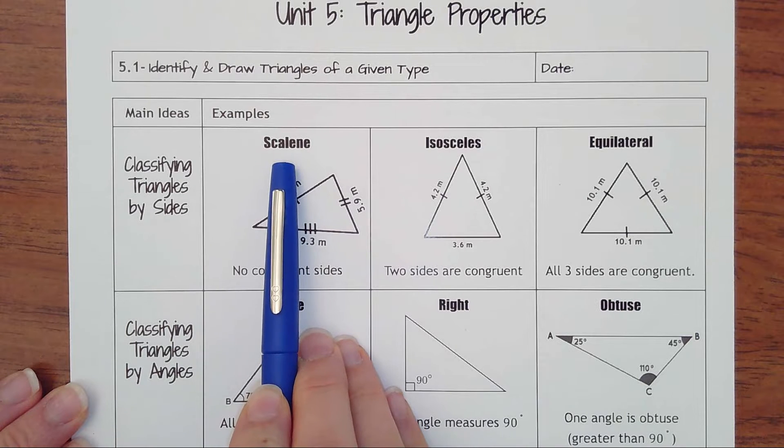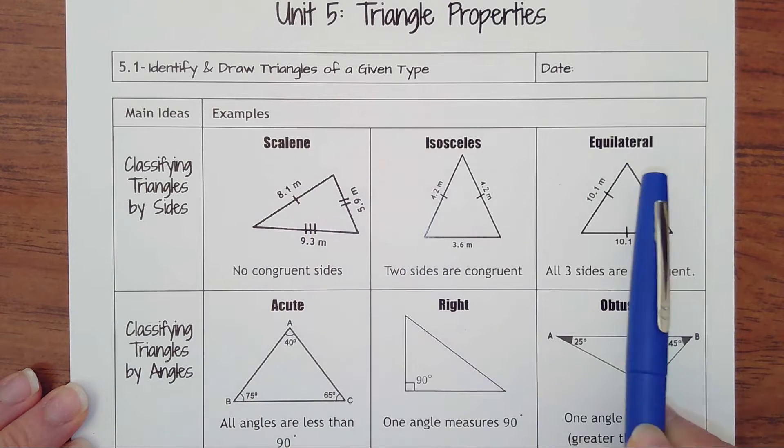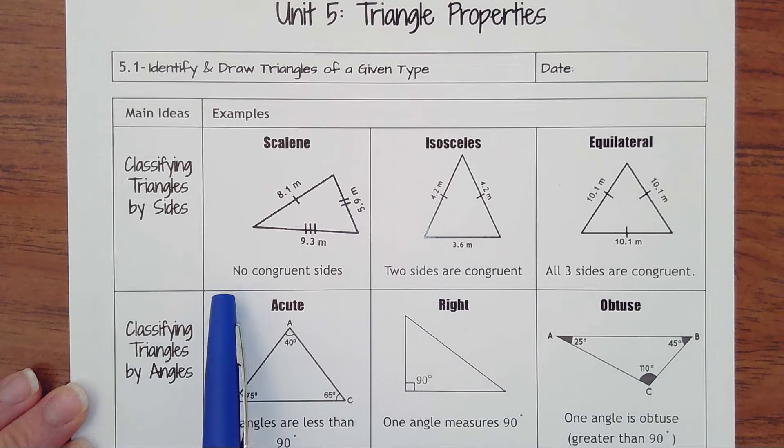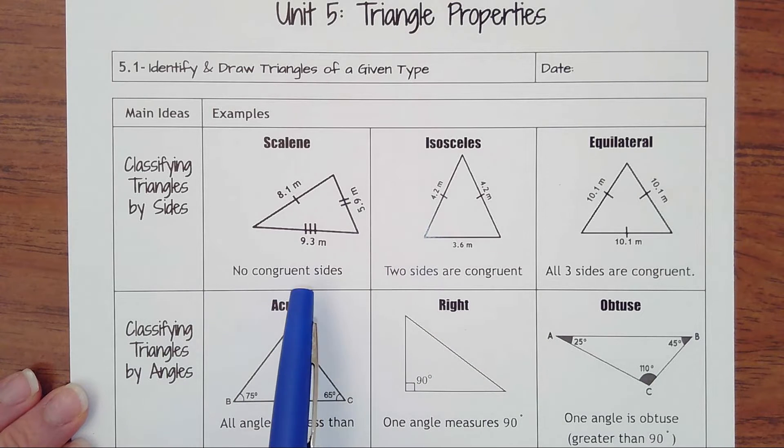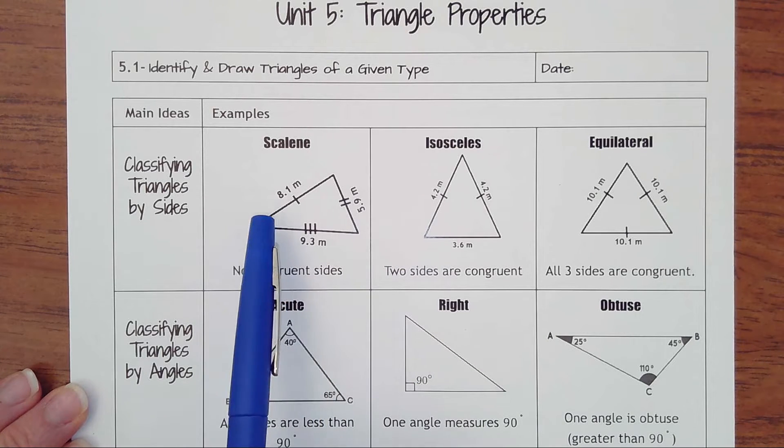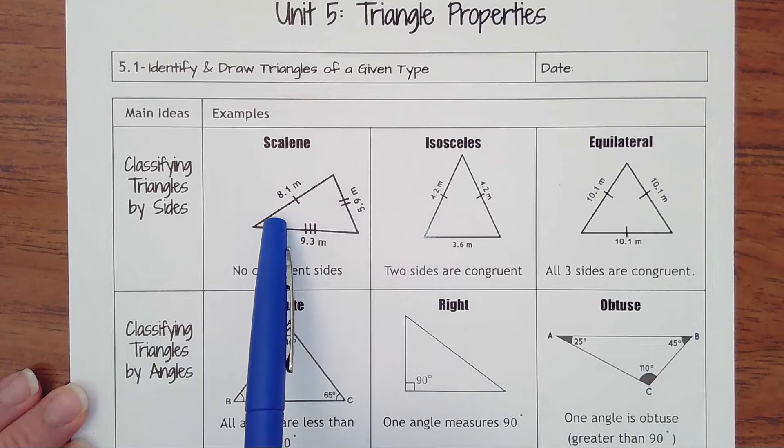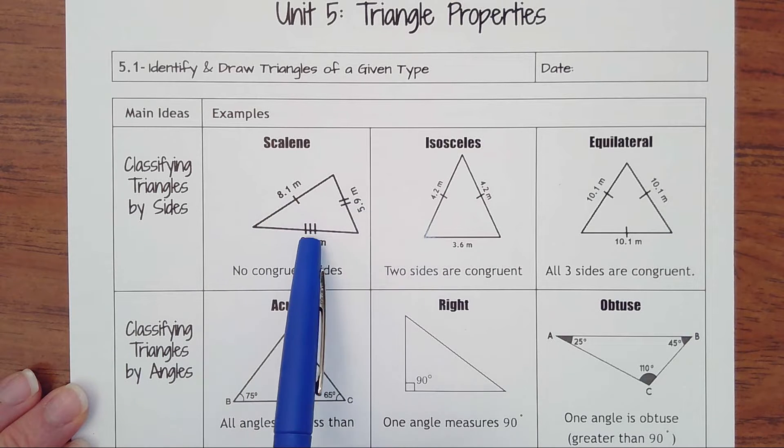There's three words you need to know: scalene, isosceles, and equilateral. Scalene is if there are no congruent sides, meaning all three sides are different lengths. Sometimes they'll have the measurements. Sometimes you'll see the tick marks, which means these sides are not the same.